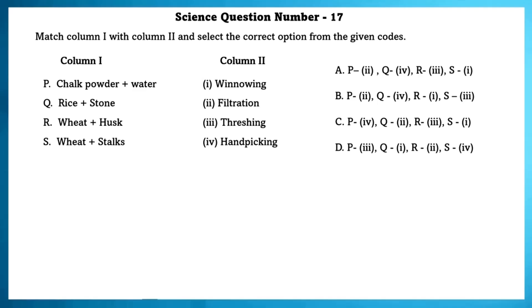Science question number 17. Match column 1 with column 2 and select the correct option. Chalk powder plus water goes with filtration. Rice plus toad is hand-picking. Wheat and husk is winnowing. Wheat and stocks is threshing.